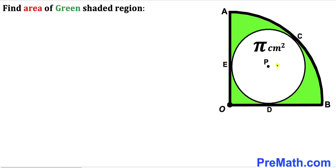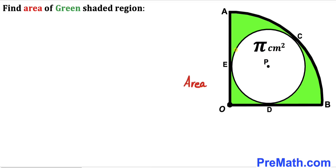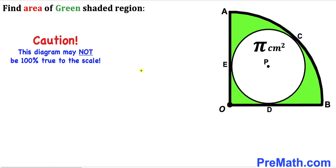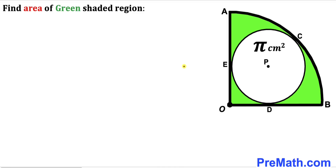Welcome to PreMath. In this video we have a white circle with center P fully inscribed in a quarter circle with center O, as shown in the diagram, such that points C, D, and E are the points of tangency. The area of the white circle has been given as pi centimeter square, and our task is to calculate the area of the green shaded region. Please don't forget to give a thumbs up and subscribe. Note that this figure may not be 100% true to scale.